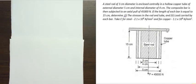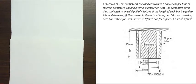This is the composite bar. The outer is the copper tube, and inside is the steel rod. The outer diameter of the copper tube is 5 cm, the internal diameter of the copper tube is 4 cm, and the diameter of the steel rod is 3 cm. The load applied is 45,000 N, and the length of each bar is equal to 15 cm.